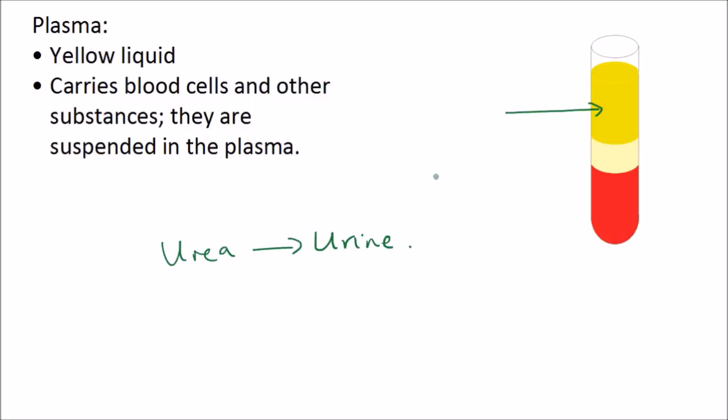Urea is carried in the blood plasma, and the plasma carries things like glucose and carbon dioxide as well. And all these substances, as well as all of your blood cells, are suspended in the plasma. So your blood is a suspension of all the other blood cells and all of those substances suspended in the plasma.